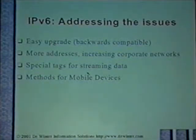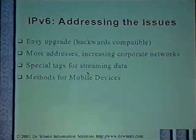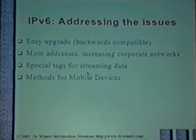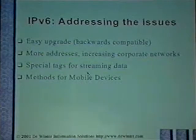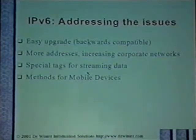One of the most important things was that the upgrade should be easy. People don't understand the internet now, and they sure are not going to understand it when more people are joining. More addresses — people always think this is the main reason we are going for IPv6. But we have all types of lame hacks to make IPv4 work, and if we really want to, we could keep that alive. You also want to add special tags for streaming data, and the last one is the method for mobile devices — they want mobile devices to have an IP address.